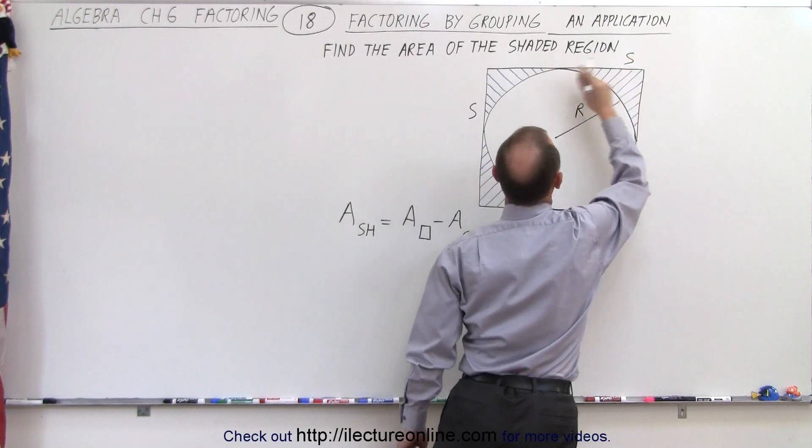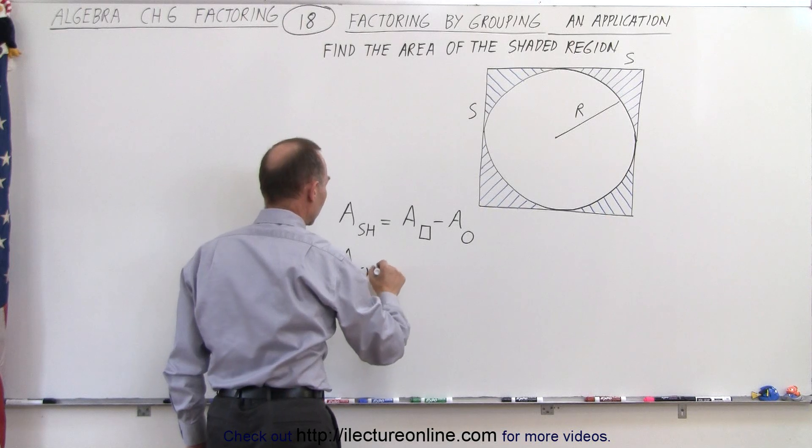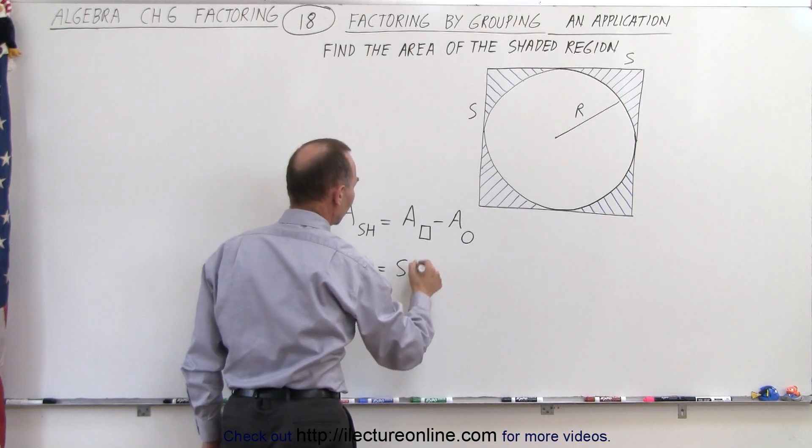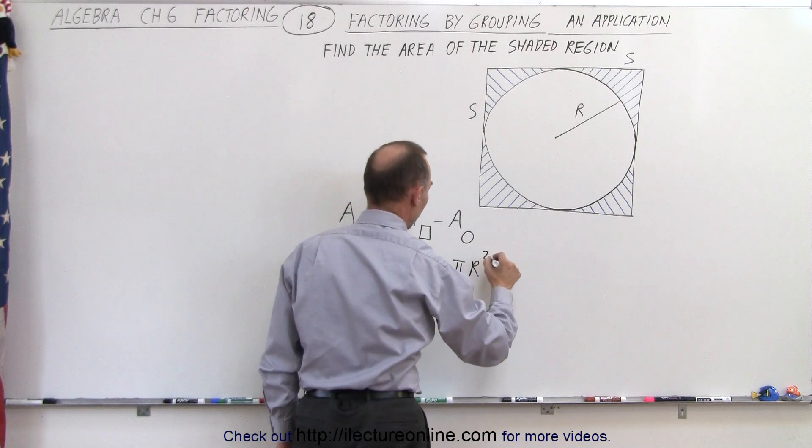So these sides are length S. That means that the area of the shaded region is equal to S times S, or S squared, minus the area of the circle, which would be pi times the radius squared.